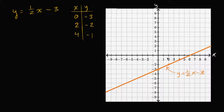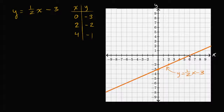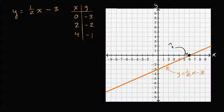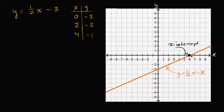Now when we look at a graph like this, an interesting thing we might want to ask ourselves is: where does the graph intersect our axes? First we can say, well where does it intersect our x-axis? When you look at this, it looks like it happens at this point right over here. This point where a graph intersects an axis is called an intercept, and this one in particular is called the x-intercept.